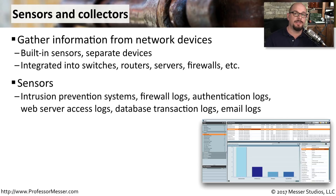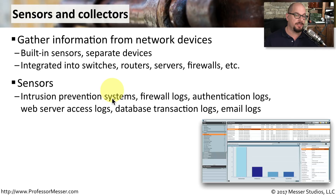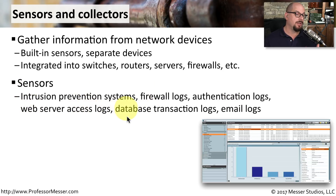The type of sensors and the information they can gather might vary widely between one system and another. For example, the type of information you get out of an intrusion prevention system is going to be very different than the authentication logs from an authentication server. The same type of diversity applies from web server access logs, database transaction logs, email logs, and all other types of services and logs you're collecting in your environment.